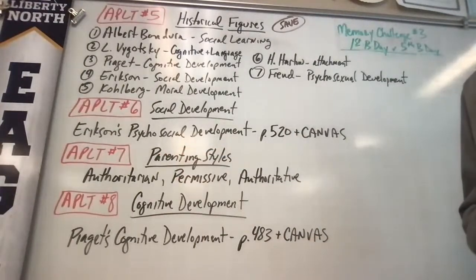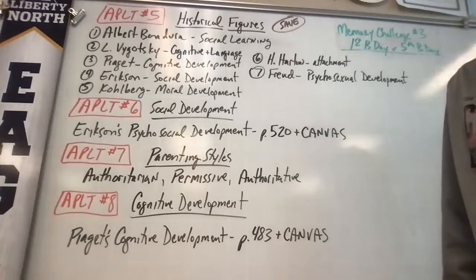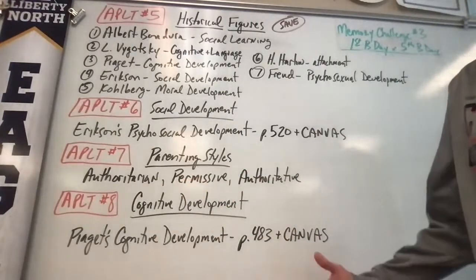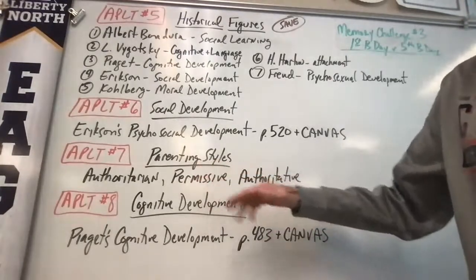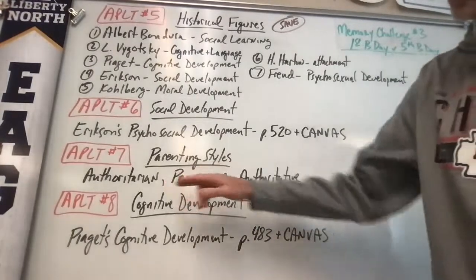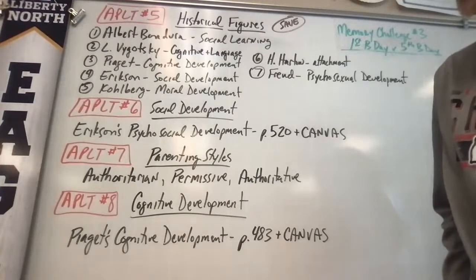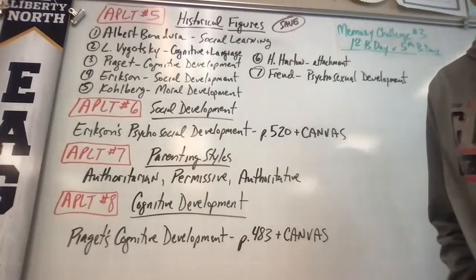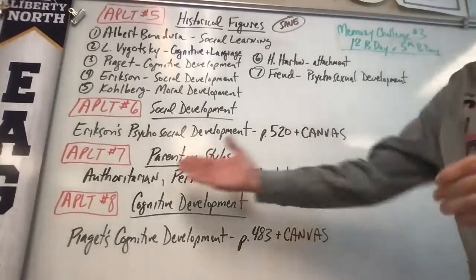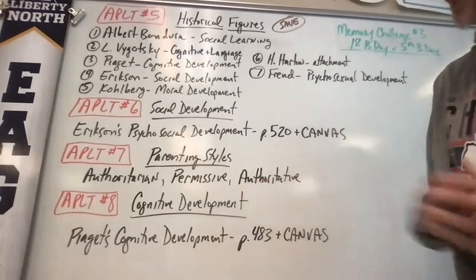AP Learning Target Number 7 is parenting style, part of nurture influences. There are three basic types. Authoritarian is basically dictatorship — there are rules, you're expected to obey them, no questions tolerated. Permissive parenting is where parents just want to be the child's friend rather than a parental figure — very permissive and passive. Authoritative — not authoritarian, but authoritative — is probably the best choice according to the book. Parents take on an active parental role, but it's more like a democracy with discussion, communication about rules, and understanding. Studies show the more authoritative the parenting style, the more healthily the child develops.